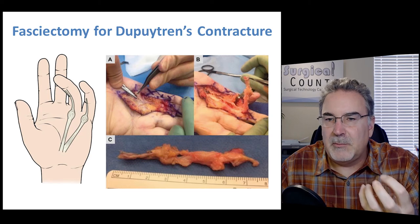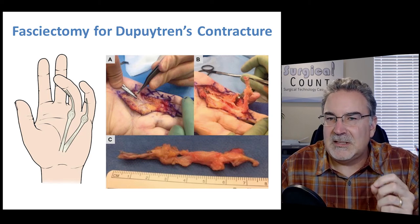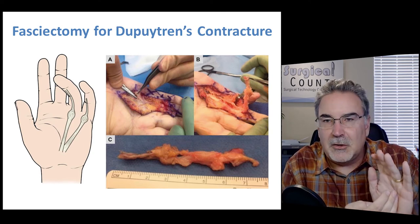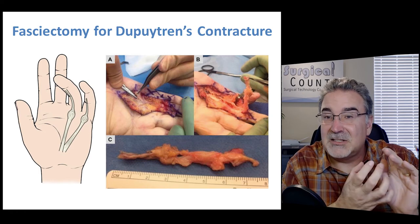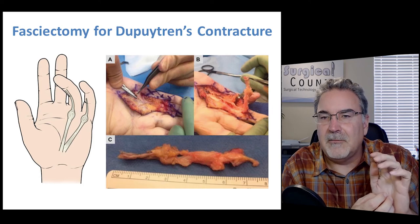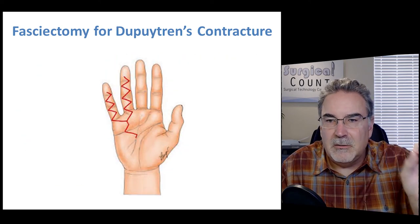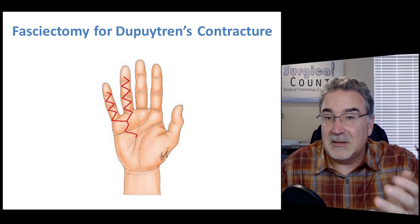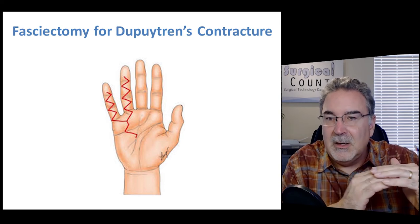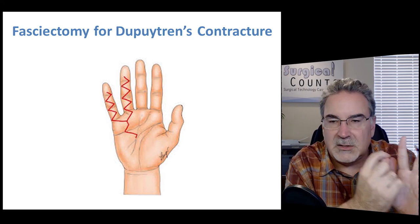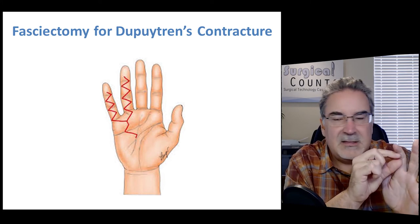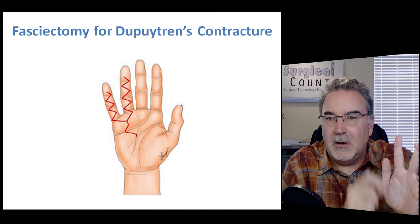With the Z-plasty principle in mind, we need to be careful how we close an incision like this. If we make just a vertical line, we'll get a vertical scar, and that tough fibrous scar tissue will again prevent the finger from opening fully. So the incision we use is in a zigzag shape — just like a Z-plasty — and this allows the scars to form in a cross-finger direction rather than along the finger, keeping the skin flexible and able to extend all the way open.